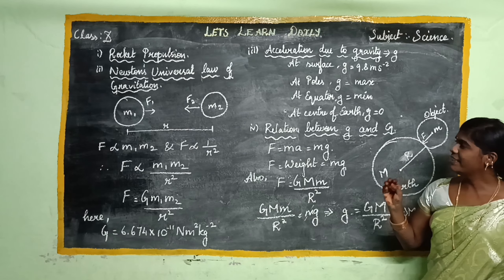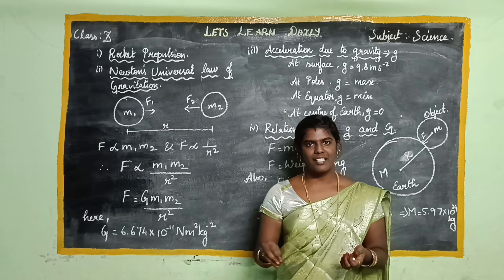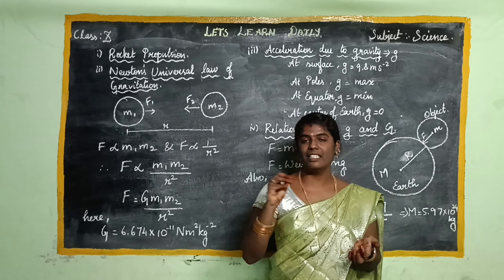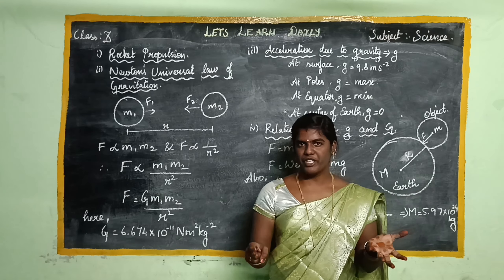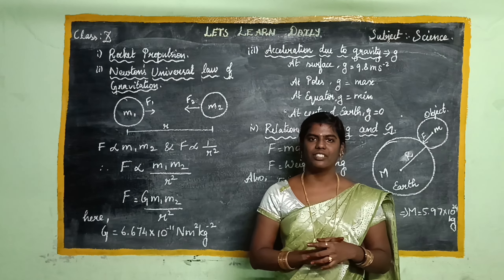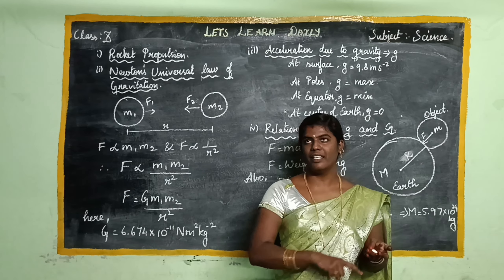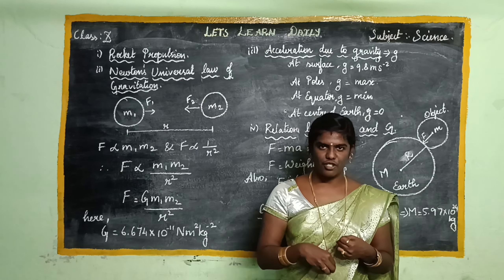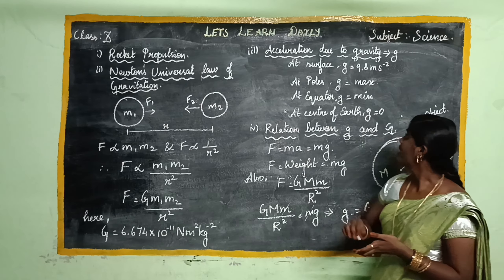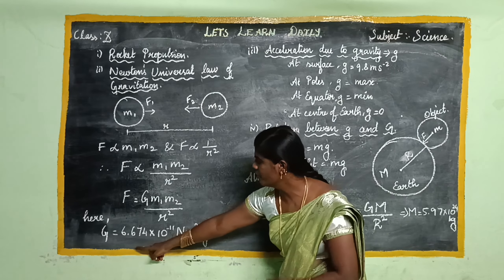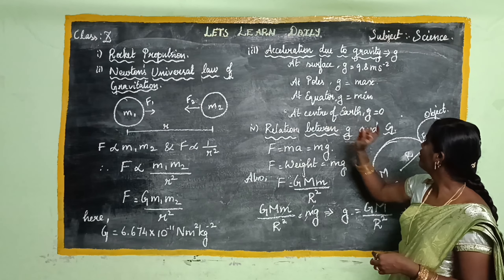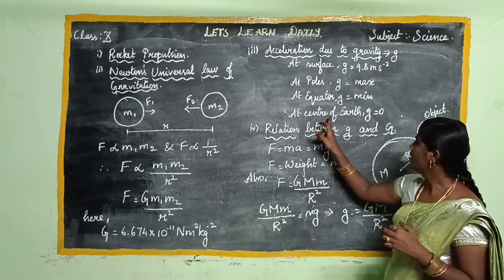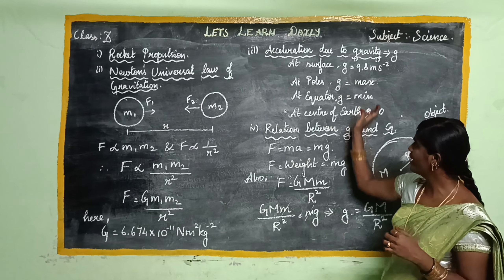Next is acceleration due to gravity. Acceleration due to gravity is the acceleration experienced by an object due to gravitational force. The value at the surface is 9.8 m/s². The value is maximum at the poles and minimum at the equator. At the center of the Earth, it will be zero.